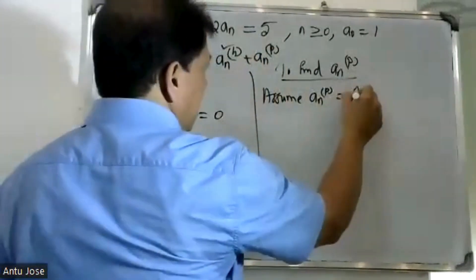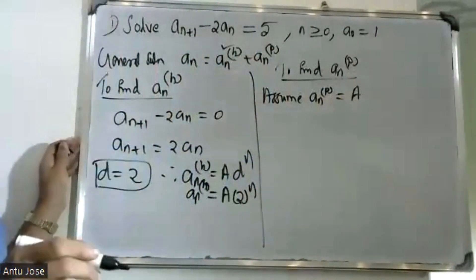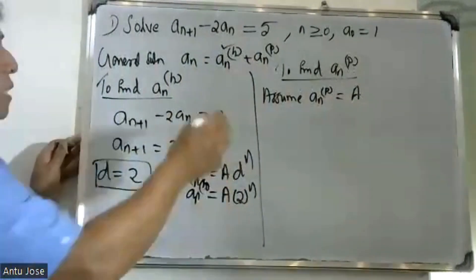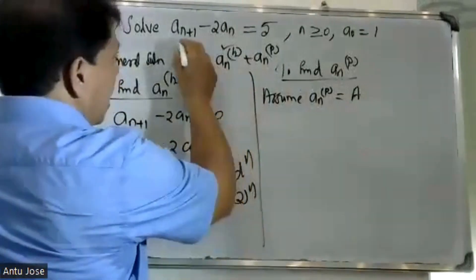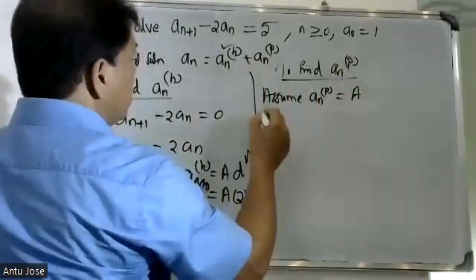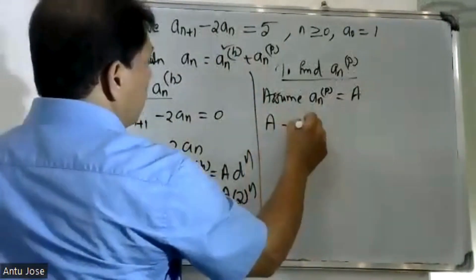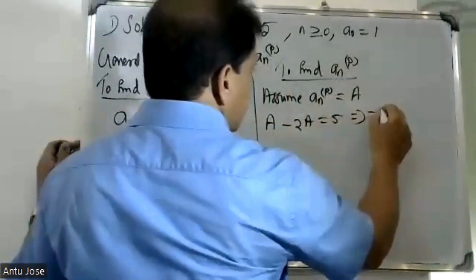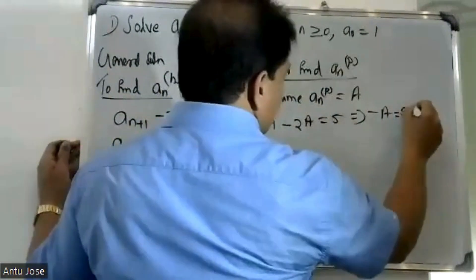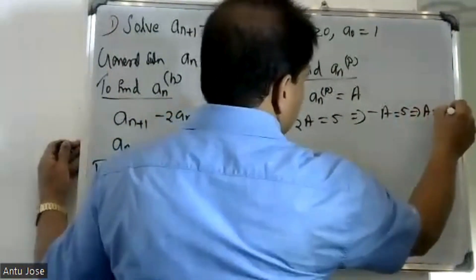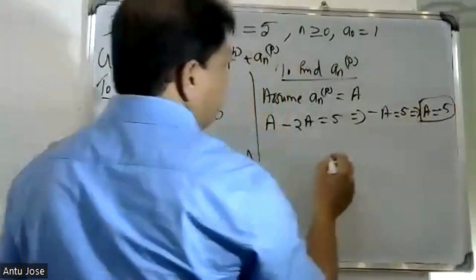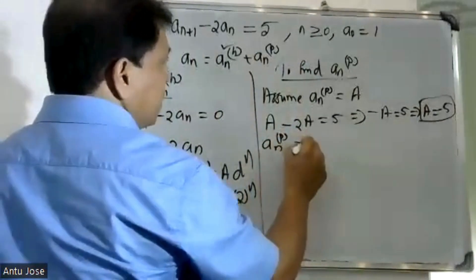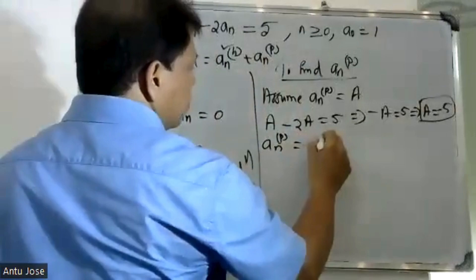Substituting into the recurrence: A minus A equals 5 gives A minus A equal to 5. Solving, we get A minus A equals 5, that is A is equal to minus 5. Therefore the particular solution a(n)^p is equal to minus 5.